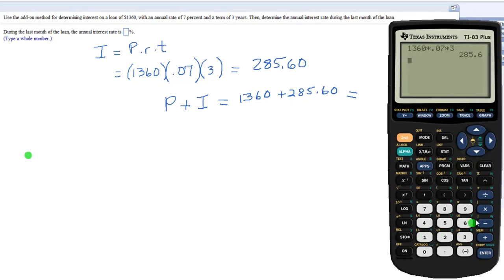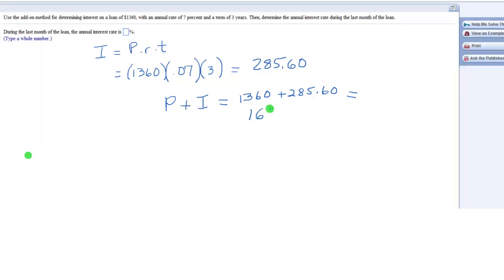So let's see, take your interest, which we have up there, the $285.60, and add it to the $1,360. Okay, so that gives you $1,645.60.